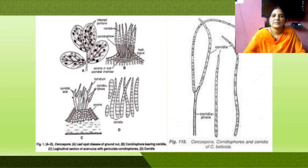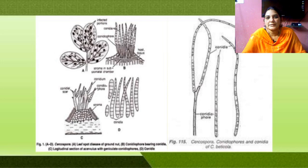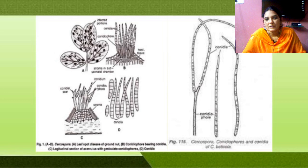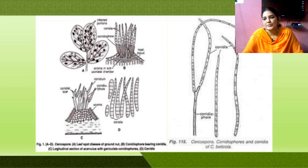When the mycelium is completely formed, it undergoes reproduction — here it undergoes asexual reproduction, as we can see in the diagram. The mycelium produces conidiophores. The conidiophore is a long elongated, club-shaped structure.